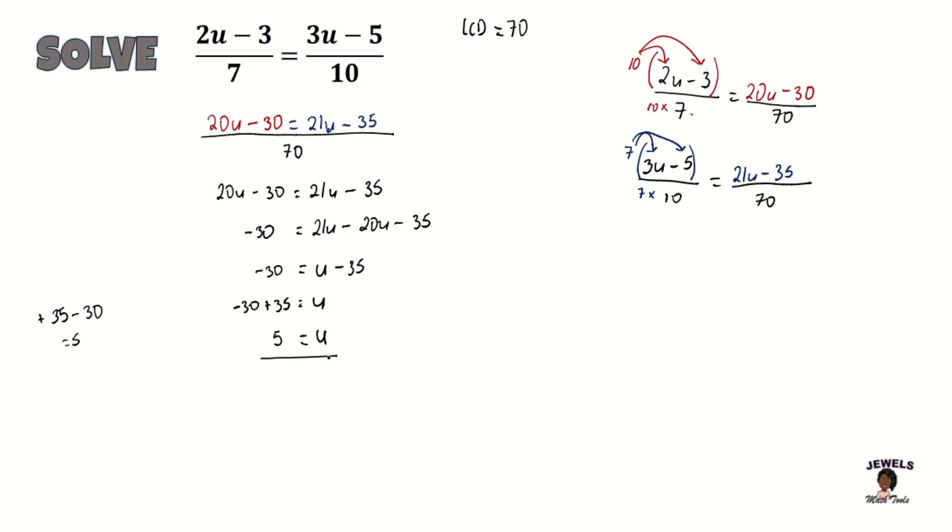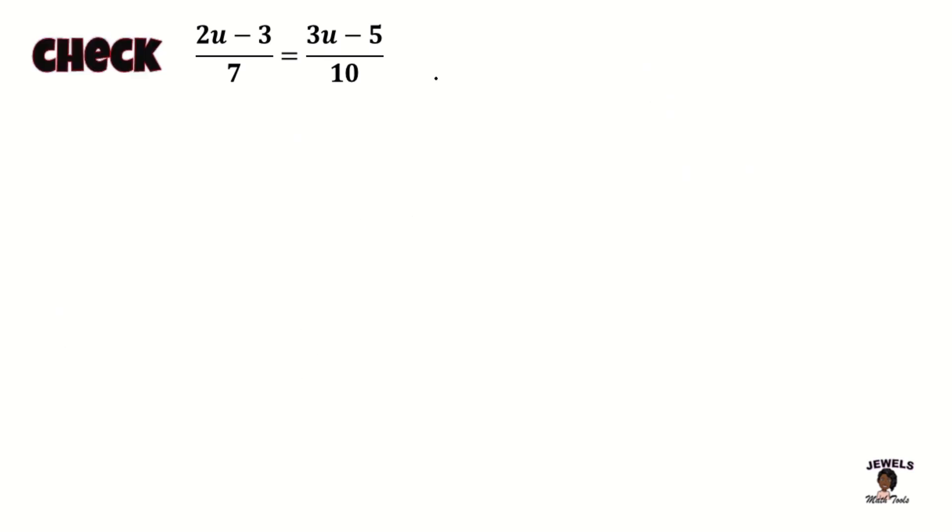It's time to check our answer. We always do this step before we close out. If u is equal to 5, that means we're now going to be replacing u everywhere that it appears in our equation with the number 5. We always show our substitution first, and then we're going to begin working through our question.